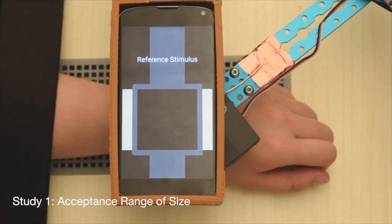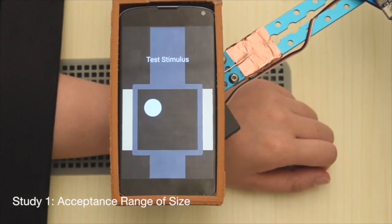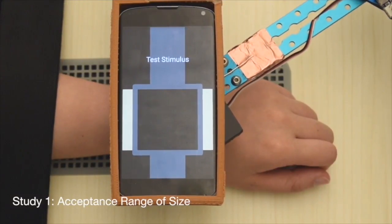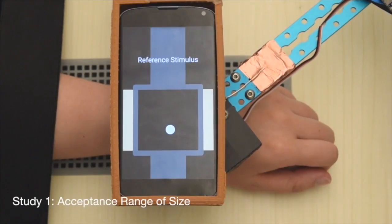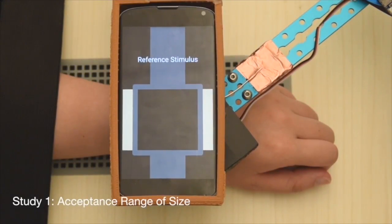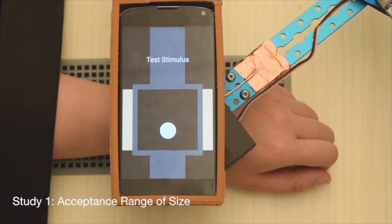In study one, we explore the discrimination threshold of size difference between the taxel and visual object. The results indicate that different size visual and tactile stimuli can be coupled if their relative size ratio is within certain thresholds.